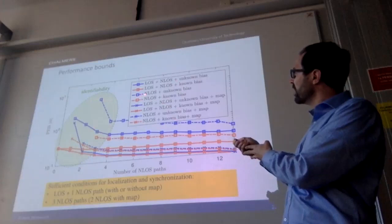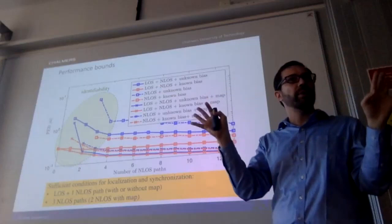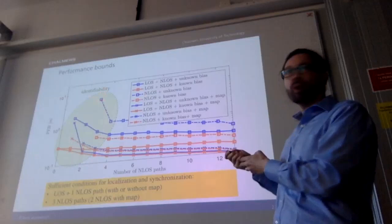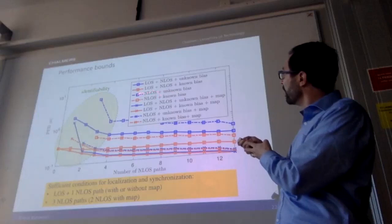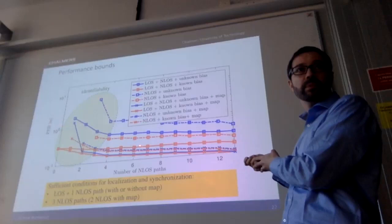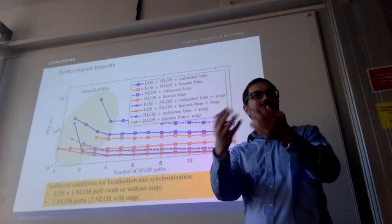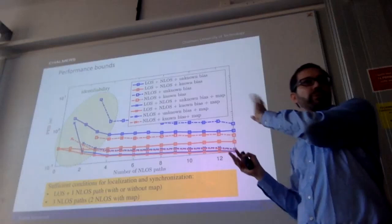This leads to a fundamental performance bound result showing how many paths are needed for positioning. On the x-axis is the number of non-line-of-sight paths; on the y-axis is a lower bound on positioning accuracy — lower is better. In the extreme case — no line-of-sight, unknown clock bias, no map information — the analysis shows that with three non-line-of-sight paths, the problem becomes identifiable and in principle you can localize and synchronize the receiver. Adding more paths improves accuracy. If the bias is known, the positioning bound is much lower. From signals of a single base station, you can estimate position, orientation, clock bias, and map the environment — even without line of sight.